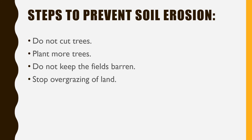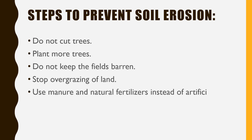Stop overgrazing of land. Overgrazing is when animals eat the plants, grasses and shrubs on a piece of land again and again. If the same piece of land is used for grazing repeatedly, it will lead to soil erosion because no trees will remain, and trees act as a binding force to prevent soil erosion. Also, use manure and natural fertilizers instead of artificial chemical fertilizers to keep the soil fertile.